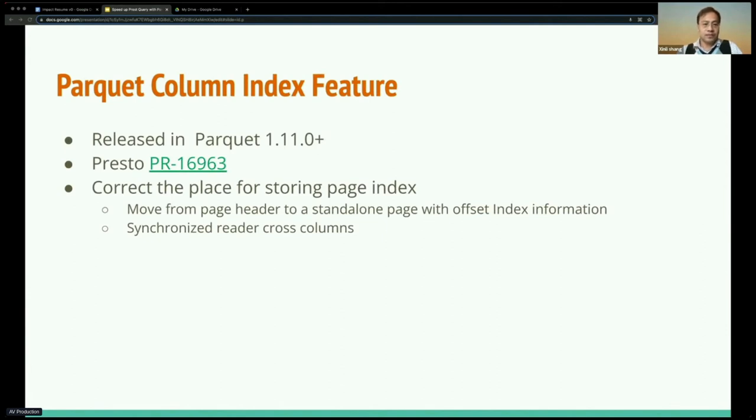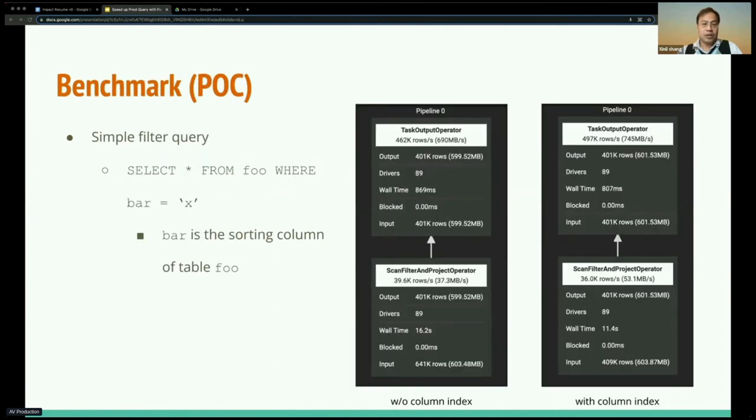So Parquet column index feature, particularly meaning the page level index, is released in Parquet 1.11 and the Presto changes are in progress. Basically, it corrects the place for storing the page index. It moves from the page header to a standalone page with offset index information. It needs synchronized reader across columns. Now I'll hand it over to my colleague Chen to talk about the benchmark.